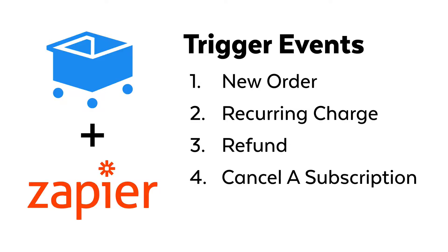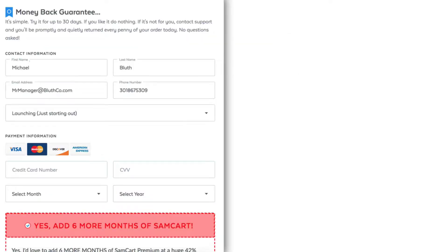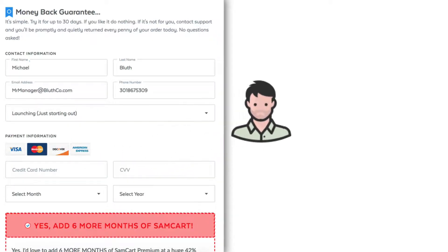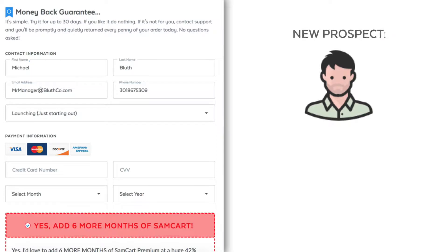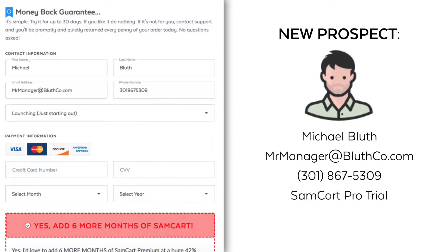It's all thanks to another improvement to our cart abandonment, where in Zapier you can now trigger an event based on a new prospect. So anytime someone hits a SamCart checkout page, starts filling out their information, and then leaves, SamCart logs that person as a new prospect and saves their information so that you can follow up with them later on.